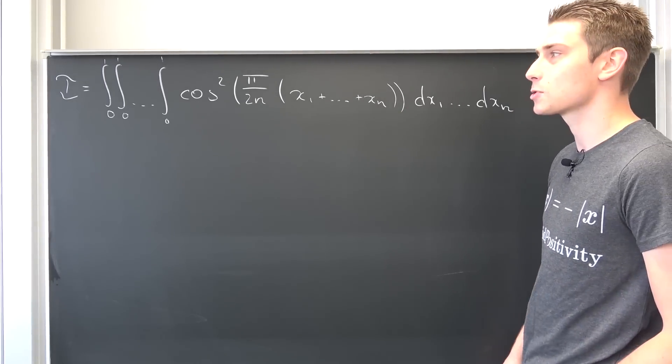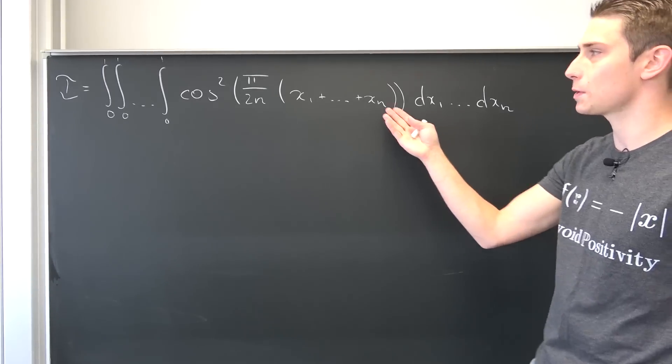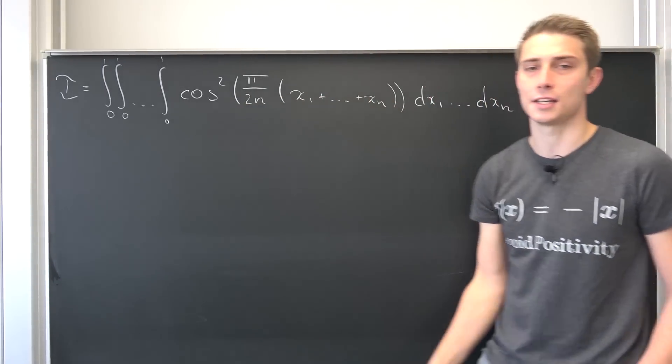Now, we are going to dive right in. That's an old Putnam exercise and it's quite fun. We have multivariable integral over n integrals with the cosine and this shit and its arguments.